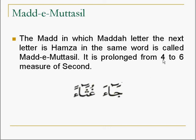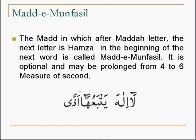When there is a madd mutassil, we need to prolong the letter from four to six measures of a second. For example: alif, fatha, madd — 'jaa', hamza, fatha — 'jaa'. Similarly, we can see hamza in the same word. This is madd mutassil.